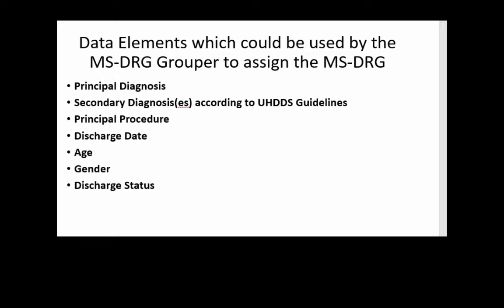What I want to focus on is that you understand the encoder, the CAC, and the grouper, and how those all work together to assign the DRG.